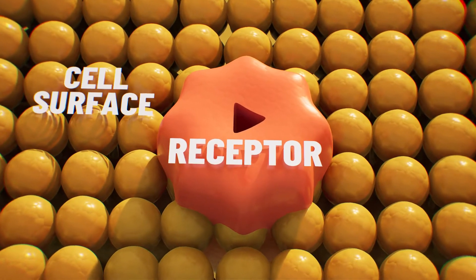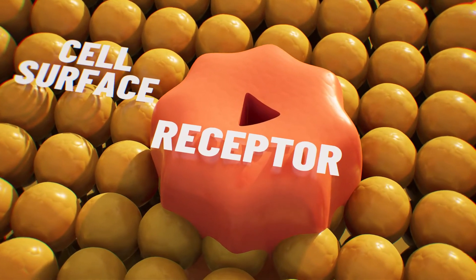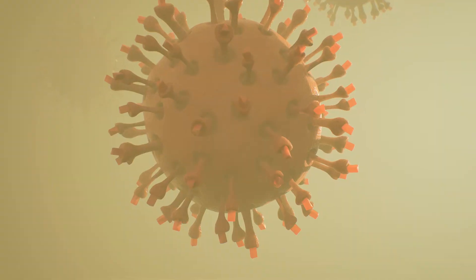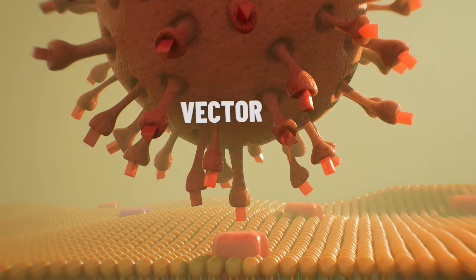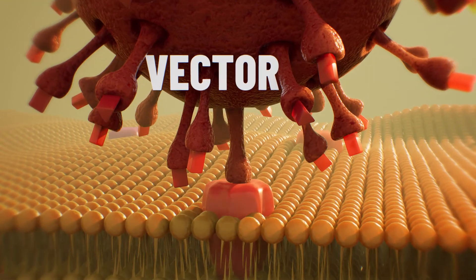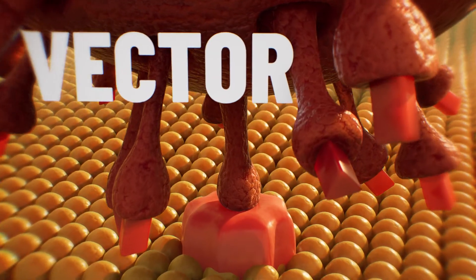Receptors can be thought of as docking stations that only allow specific vehicles to park. The specialized vehicle that contains a genetic therapy, called a vector, must be able to dock onto a receptor so that the therapy can be taken up by the cell.